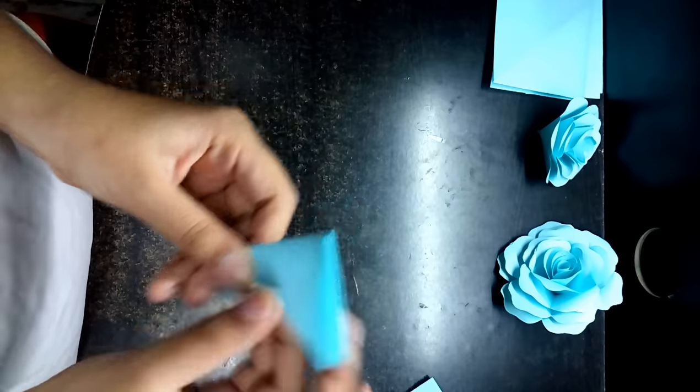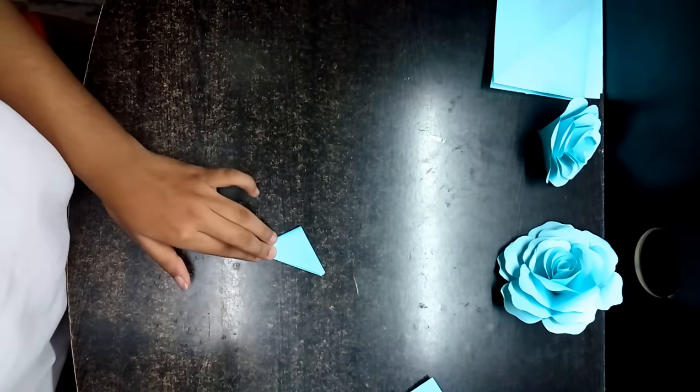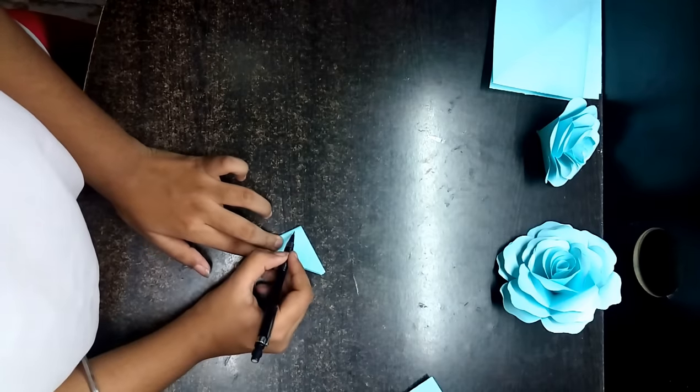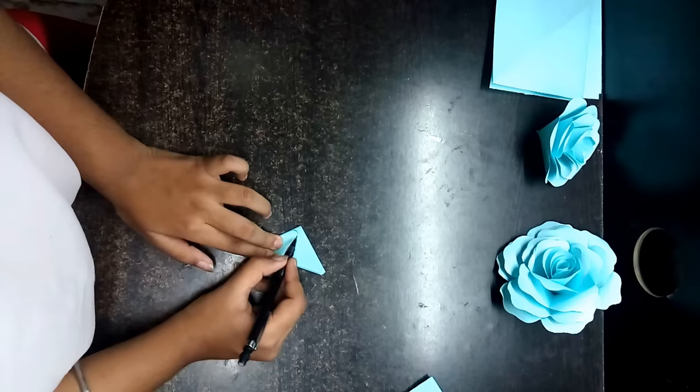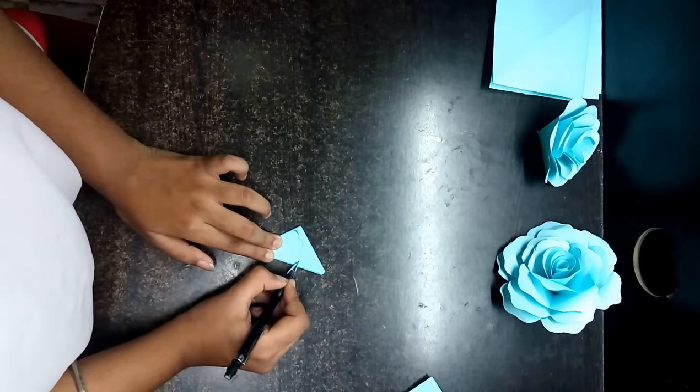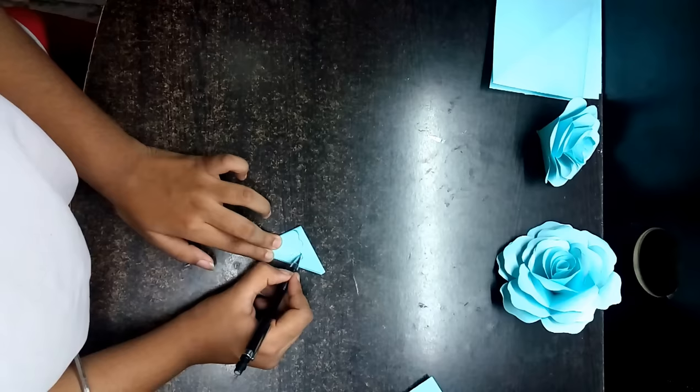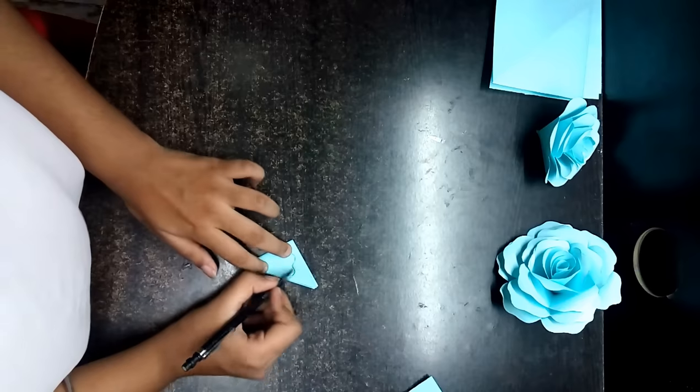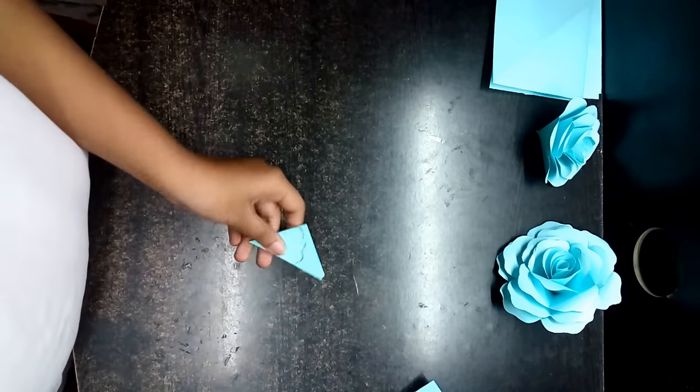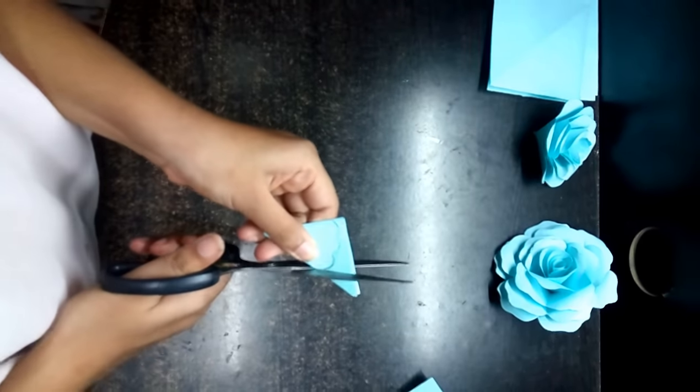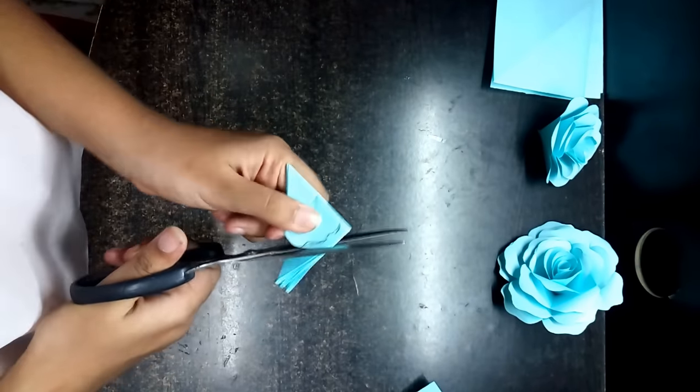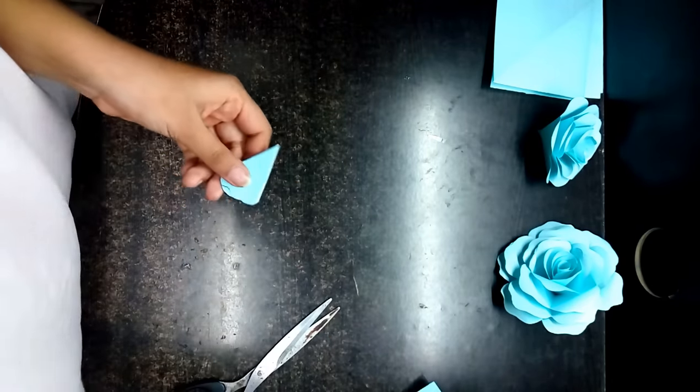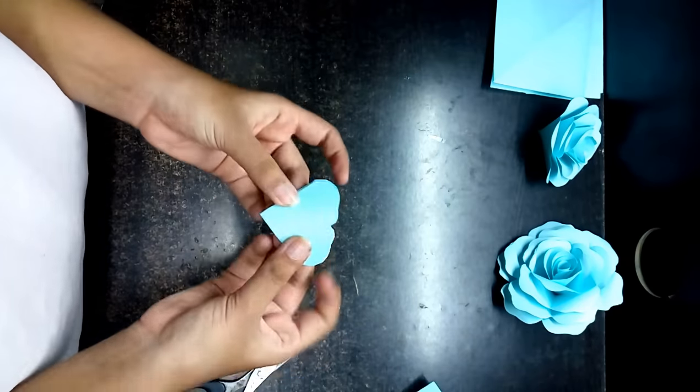Okay, for a petal, take a pencil and just draw some random lines, whatever you want to draw. It's a petal of a rose, so we can make it a little wavy like this. Just cut it.